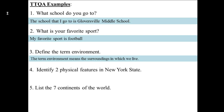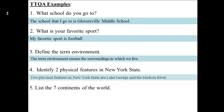You must answer your questions in a complete sentence using TTQA. Define the term environment — the term environment means blah blah blah. Number four: identify two physical features in New York State. Let's make that a complete sentence using TTQA: 'Two physical features in New York State are Lake George and the Hudson River.' It could be a variety of answers, but the setup, the structure — the TTQA part — is what's important.